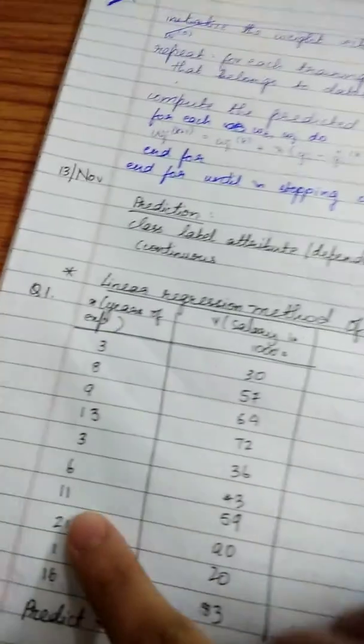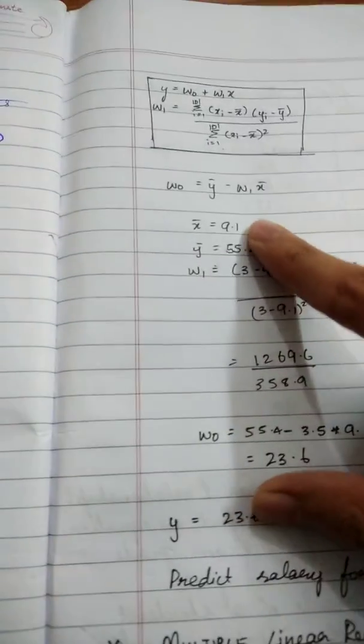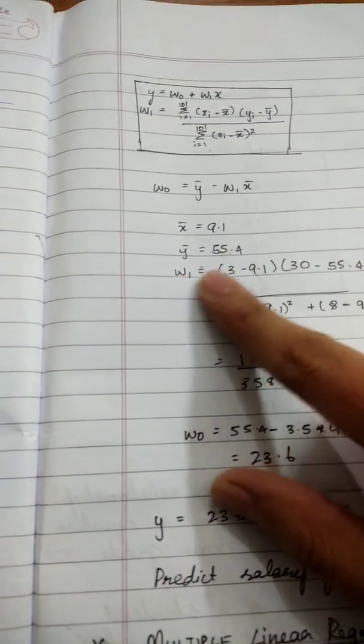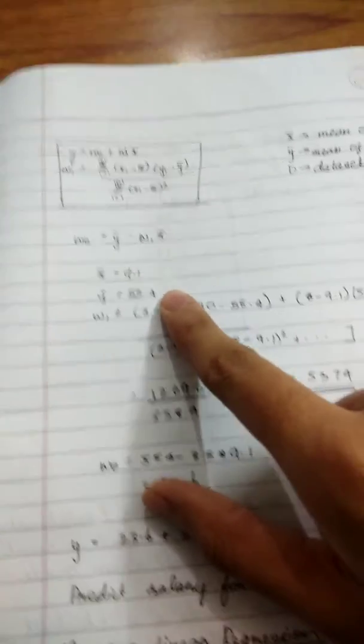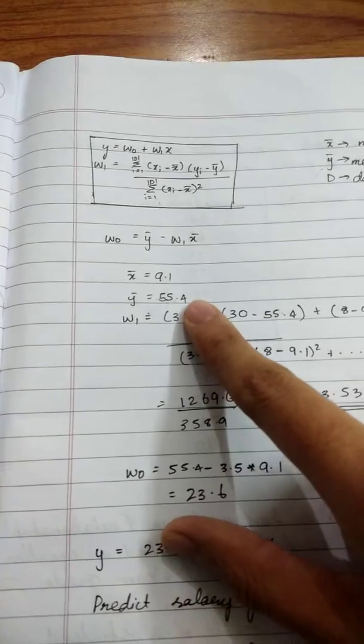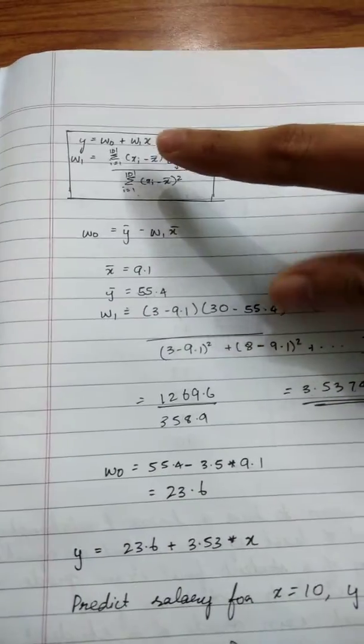If you find the mean of the X table, you get 9.1, and if you find the mean of the Y table, you get 55.4. The first thing you do with these two values is substitute them into the W₁ formula.